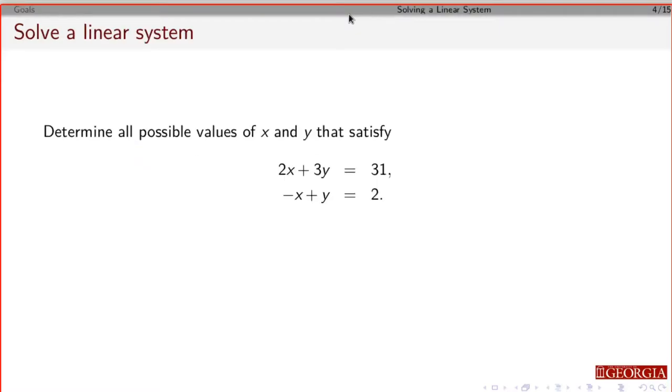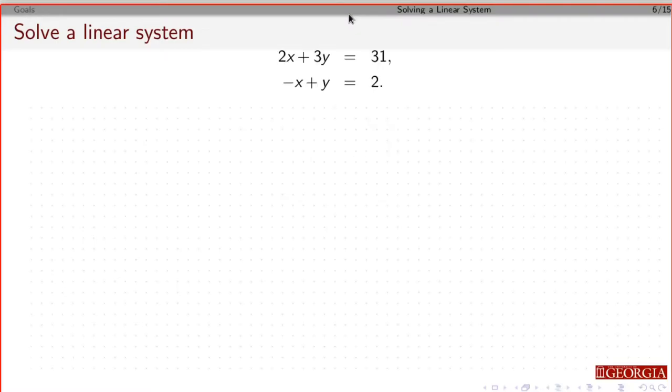We've seen before you can take a linear system. If I have 2x + 3y = 31 and -x + y = 2, I can refer to the different equations. The first equation would be row 1 of our augmented matrix, R1, and the second equation in row 2, R2. We took our system of equations and put it in an augmented matrix: 2x + 3y = 31, -x + y = 2.